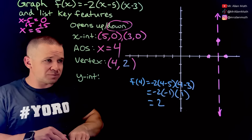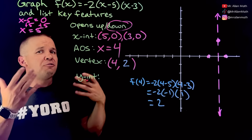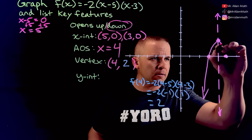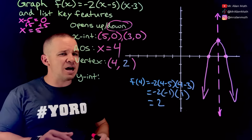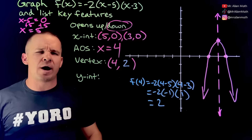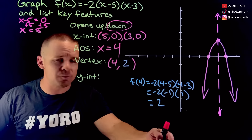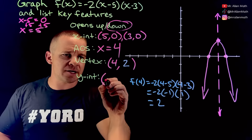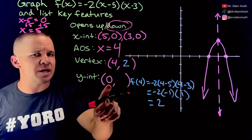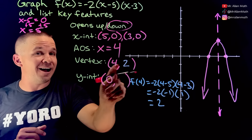Now I have three points to graph this thing — some teachers will ask for five total points. I can make a pretty nice looking parabola right here with those three. I did ask for the y-intercept as one of the key features. How do I get my y-intercept? I know it's crossing on the y-axis, and my x-value anywhere along the y-axis is zero, so my x-coordinate is going to be zero — I've got to figure out the y-coordinate.